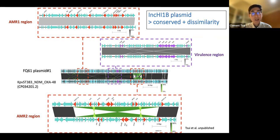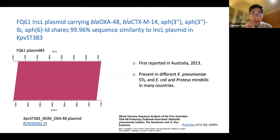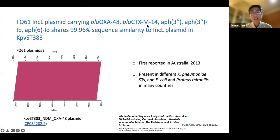So we established that our Klebsiella ST383 isolate's biggest plasmid is very similar to the one reported from the UK. We also compared the second largest plasmid of our isolate to the one from the UK — it is almost over 99.9% identical between the two. There are only a couple of mutations between the two plasmids. On this plasmid they carry OXA-48, CTX-M-14, plus two additional AMR genes.